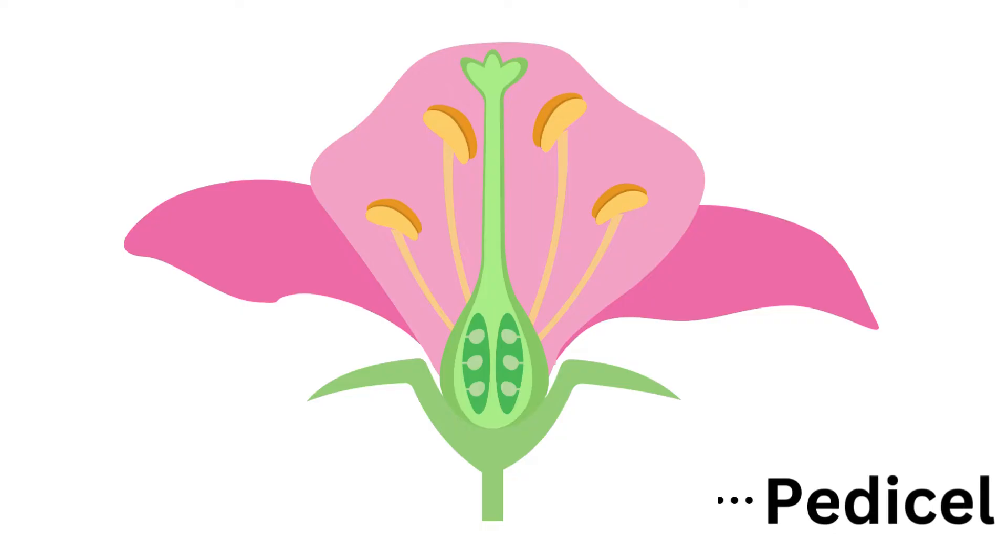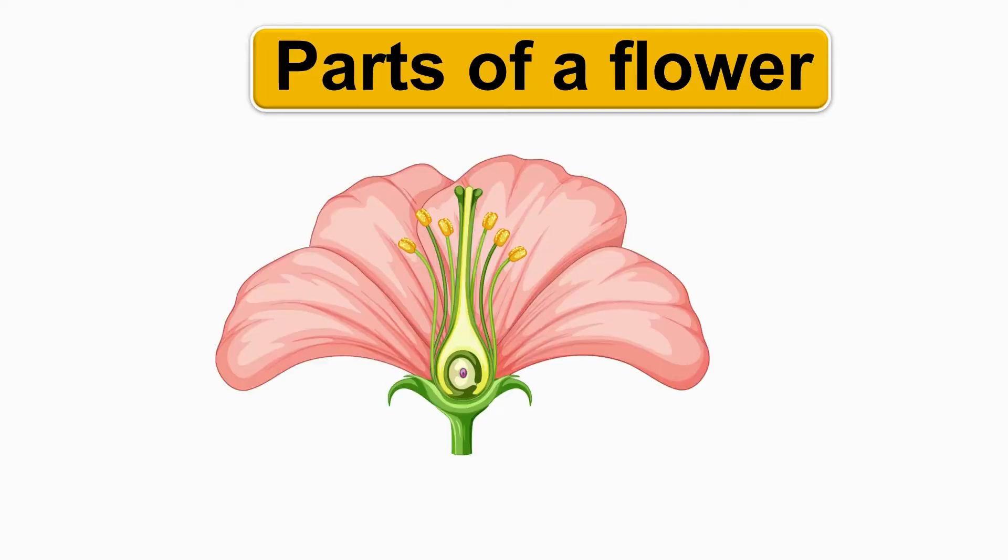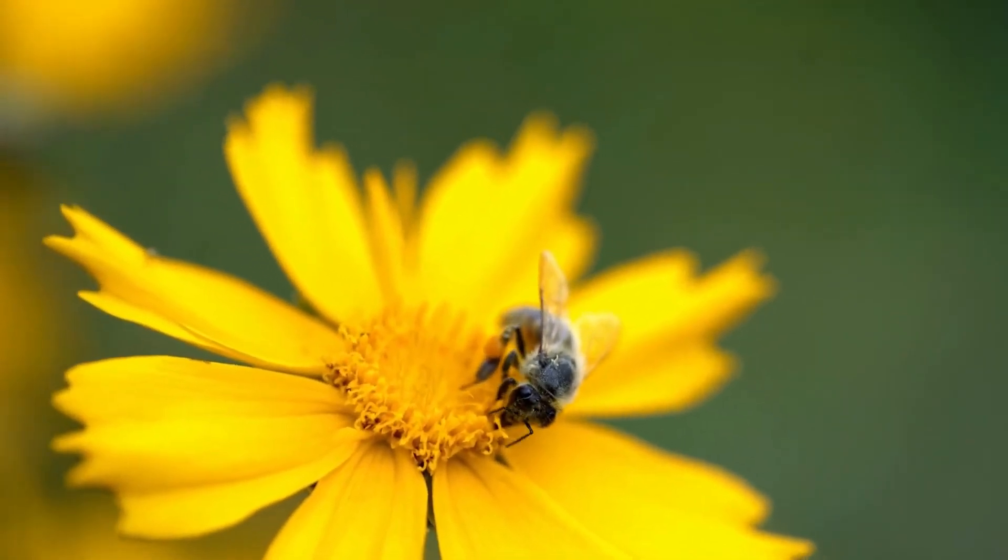Peduncle, the stalk of a flower. Receptacle, the part of a flower stalk where the parts of the flower are attached. The petals and the sepals protect the flower bud and can be brightly colored or scented to attract pollinators.